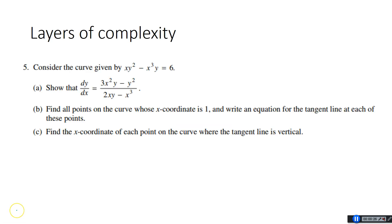You've got this on your worksheet. If you want to try it yourself first, please do. You'll notice that AP always puts these layers of complexity in there. The first part they actually give you the answer — you just have to show it. They want to see if you can do the implicit differentiation to get to that point. Then they ask high-level questions: if the x-coordinate is 1, find the points, find the tangent line, and find all x-coordinates where the tangent line is vertical.